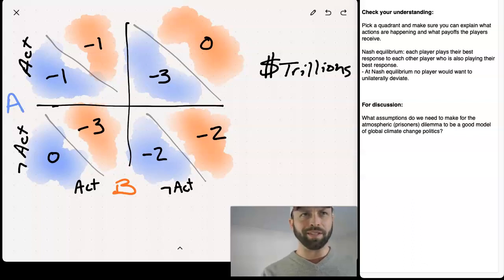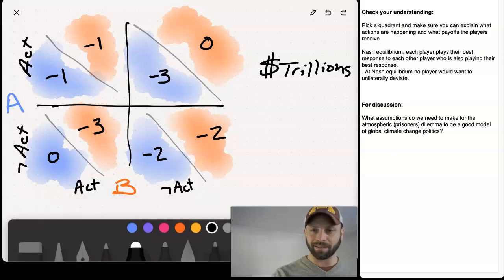There's something really sort of tragic about this, because what we see is that both of these countries end up in a position that is less good than they could be in if they found some way of coordinating. And in particular, we can come back to this, the Pareto concept.